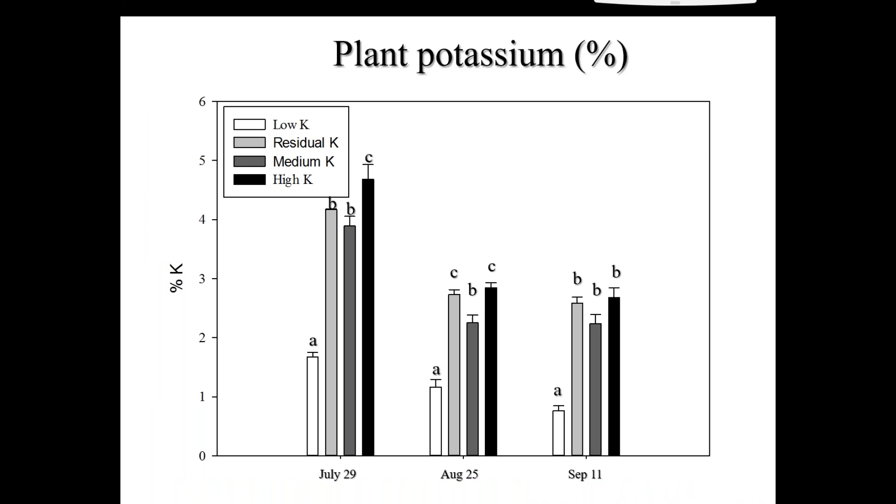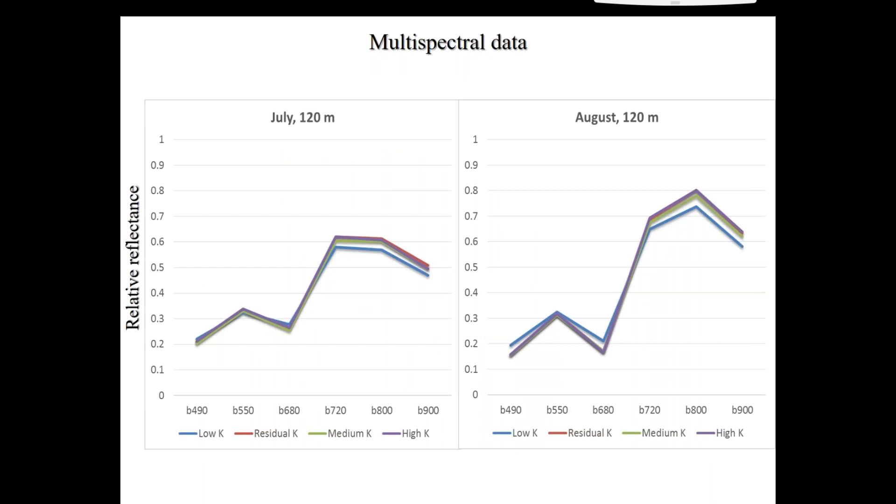For the sake of time, I won't go into it too much. But with the soil and plant nutrient analyses, it really consistently showed that the low potassium treatment was certainly deficient. But the other three treatments were considered sufficient, sufficient enough to give optimal plant growth. And then in September, we had an infestation of aphids. So that confounded the remote sensing data, but I could at least use July and August data.